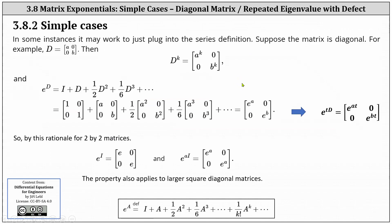Now let's take a look at two simple cases on determining matrix exponentials. In some instances, it may work to just plug into the series definition. Suppose the matrix is diagonal. For example, let's consider matrix D, which is the two by two matrix with entries a, zero, zero, b. We know that D to the power of k has entries a to the power of k, zero, zero, and b to the power of k.